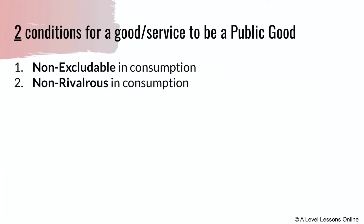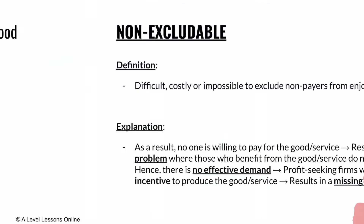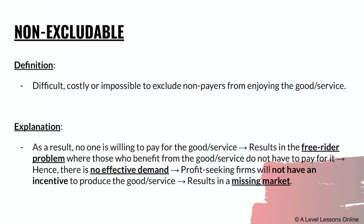The two conditions for a good to be a public good are: firstly, that it has to be non-excludable in consumption, and secondly, that it is non-rivalrous in consumption. Let's take a look at the definitions of these two terms — non-excludability and non-rivalrous.